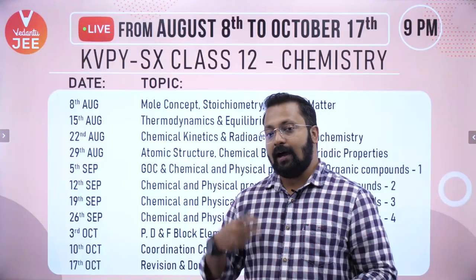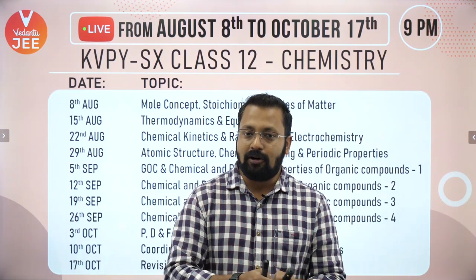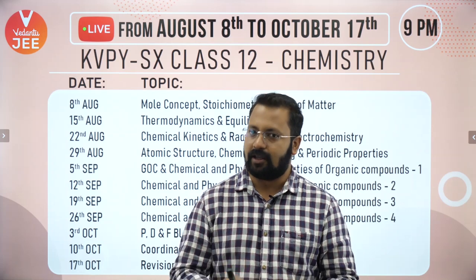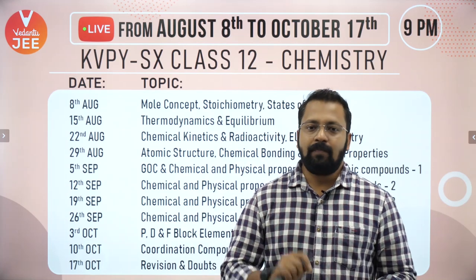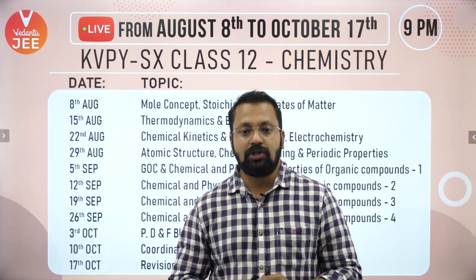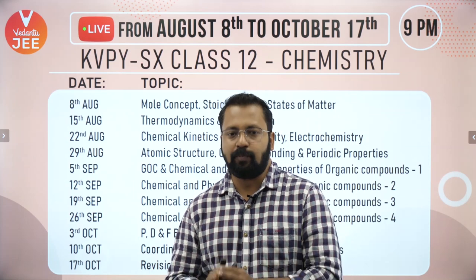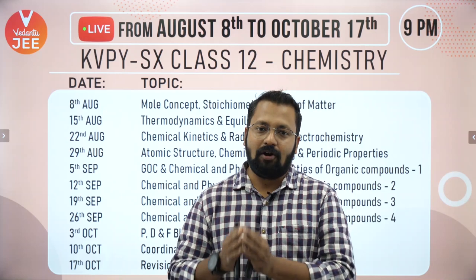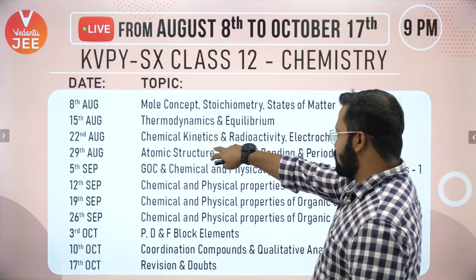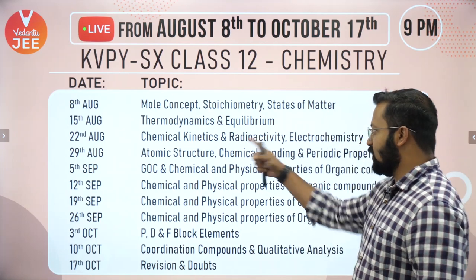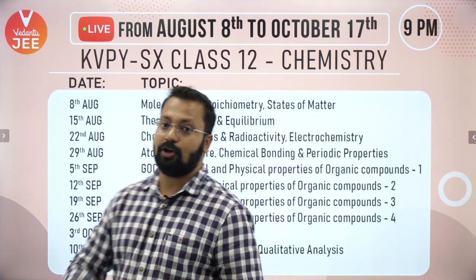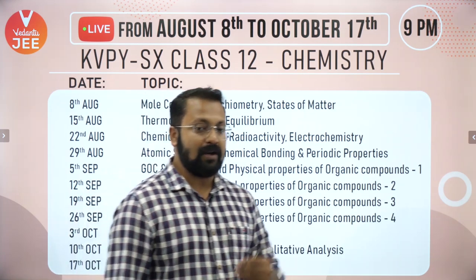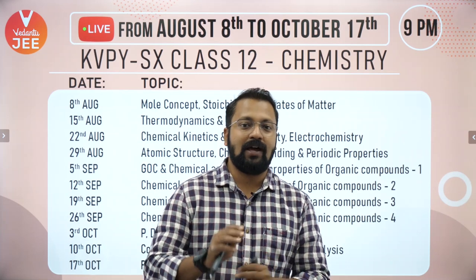Major topics in chemical kinetics are orders of reactions, zero order reaction, t-half, and radioactivity - just make sure you can identify which particles are coming out of disintegration. In electrochemistry: Nernst equation, calculation of cell potential, electrode potential, Gibbs free energy, and electroplating. Today's session is on chemical kinetics, radioactivity, and electrochemistry. The next session on 29th August will cover atomic structure, bonding, and periodic properties, which are 11th standard topics.